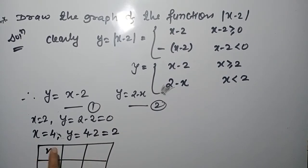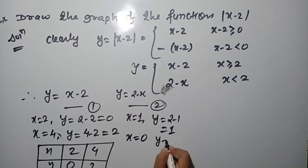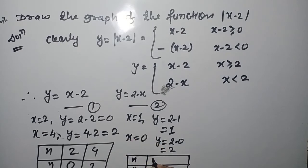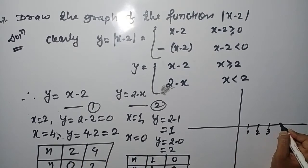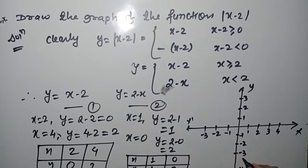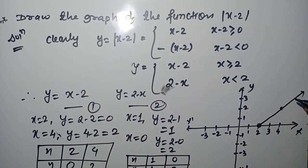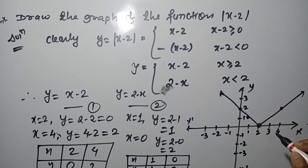We can tabulate the input and output values. For y = x - 2: x = 2 gives y = 0, x = 4 gives y = 2. For y = 2 - x: x = 1 gives y = 1, x = 0 gives y = 2. Students, here you can see the graph of the modulus function. Let us plot all these points — first y = x - 2, then y = 2 - x — joining these things. Whenever you plot the graph, it will be V-shaped like the modulus function.